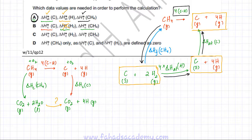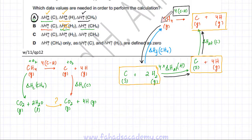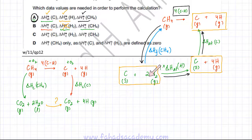Options C and D have the same problem — in each case some information is missing and a complete Hess cycle cannot be constructed. Only option A provides a complete, perfect Hess cycle where we can go from CH₄ through an alternative route and successfully reach C(g) + 4H(g). Therefore option A is the correct answer.